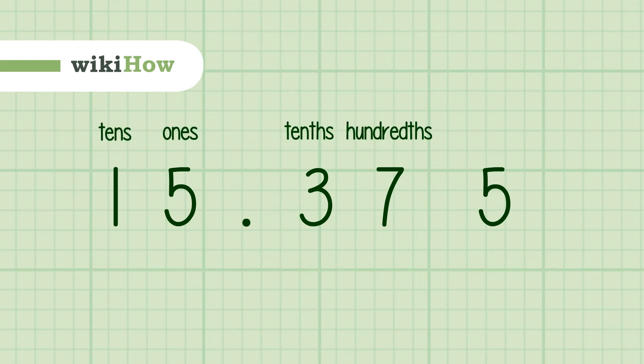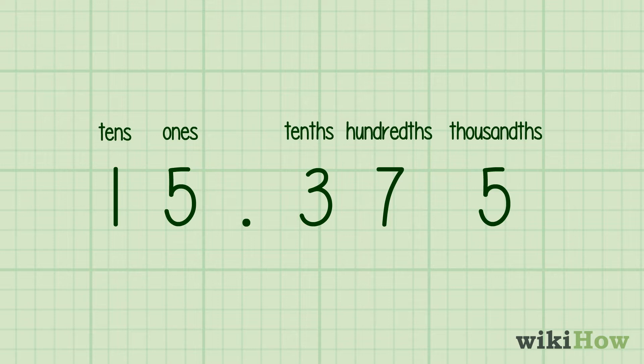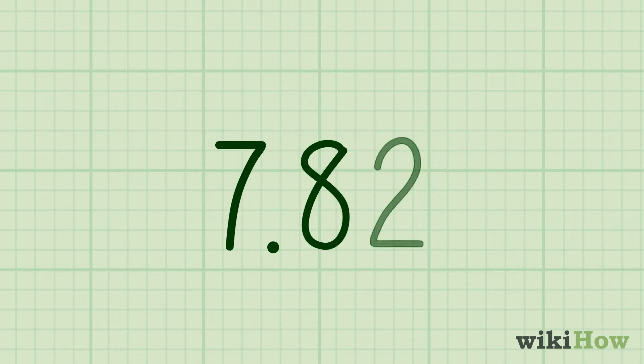Rounding to the nearest tenth is a method for making long decimals easier to deal with. To do it, write down a number that includes a decimal, such as 7.82.